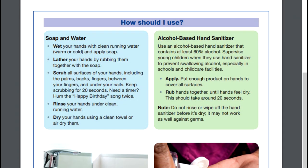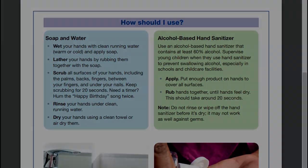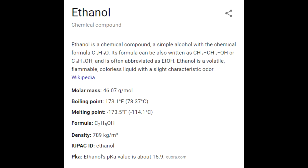The CDC recommends that for hand sanitizer to be effective, it not only needs to be sufficiently concentrated in alcohol, but it also has to remain on your hands for at least 20 seconds when it's being used. But this creates a bit of a problem. Small alcohols like ethanol have relatively low boiling points, meaning that they evaporate really easily. Ethanol's boiling point, for example, is just 78 degrees centigrade, and this means that pure or nearly pure ethanol will evaporate fairly quickly from your hands when applied, possibly causing you to miss that 20-second window.